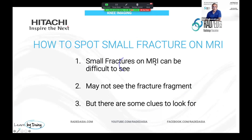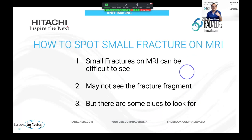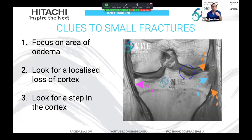Small fractures can be pretty difficult on MRI and you actually may not see the fragment itself. So you have to look for other things that point you towards a fracture — and there are a couple of things we can look at.